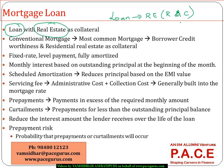Against that loan, it is required that the borrower should make a series of payments, probably comprising of interest and some portion of the principal. The borrower is required to make a series of payments over the period of the loan. And in case the borrower defaults, the lender will have the right to have a claim on the collateral. That is the typical characteristic of a mortgage loan.